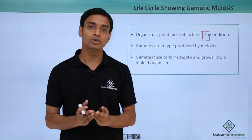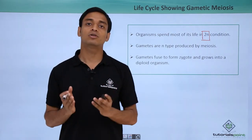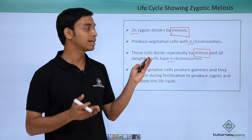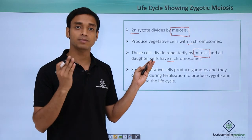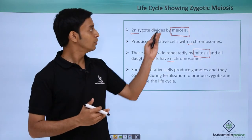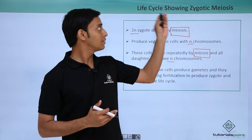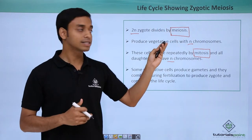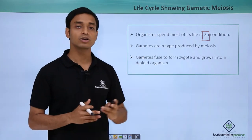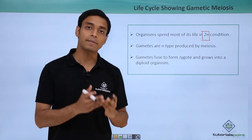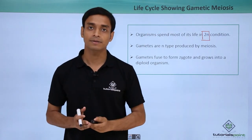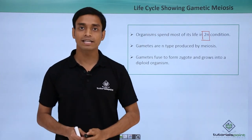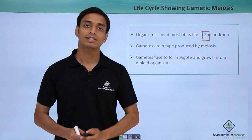In this video we have talked about the two different types of life cycle performed by the Kingdom Protista: the life cycle which shows zygotic meiosis, and the life cycle which shows gametic meiosis. I hope you have understood and liked this video. Thank you.